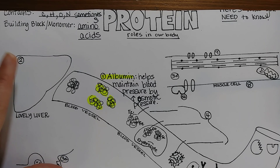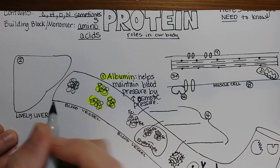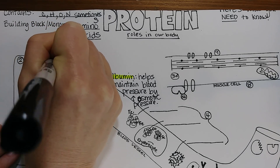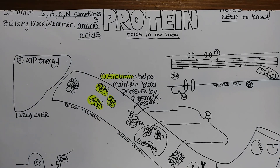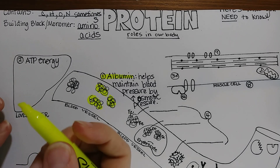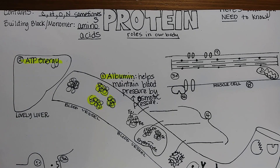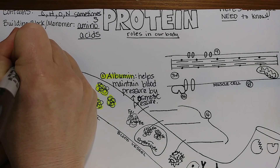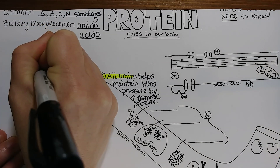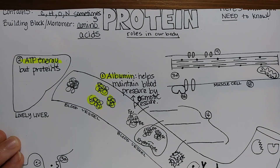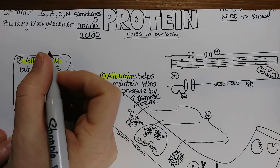Number two is ATP energy. Our bodies are able to break down protein to make ATP energy. It's not their preferred fuel — they would much prefer glucose, fatty acids, or even ketones — but proteins can be used as necessary. In order to do this, the nitrogen has to be taken off of the protein, and we call that deamination.